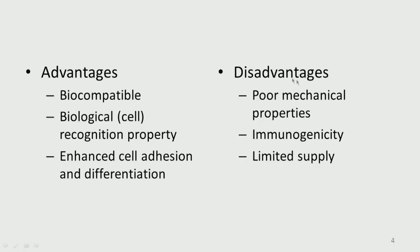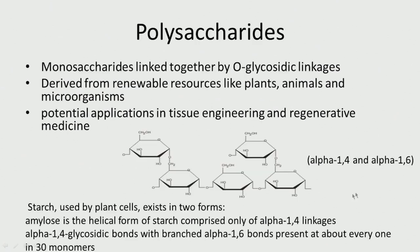Limited supply is another issue — we cannot have large amounts. For example, polyethylene is manufactured through the petrochemical route, so you can make tons and tons, whereas hyaluronic acid is a biopolymer available only in limited supply from bacterial sources. That is a big issue about these biopolymers. Let us start looking at each one of them, beginning with polysaccharides.